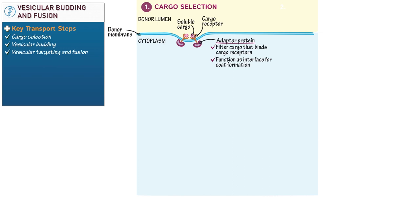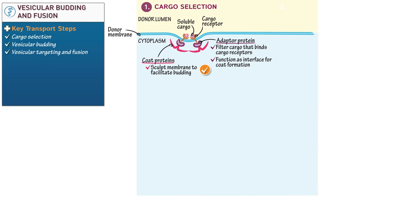Now let's assemble our vesicular coat. Show that coat proteins bind to the adapter proteins, which are in turn bound to the cargo receptors. This creates a protein scaffold on the cytoplasmic side of the membrane — a structure that bends the donor membrane and stabilizes the resulting curvature. Write that coat proteins sculpt the membrane to facilitate vesicular budding and that they also help select for correct cargo.